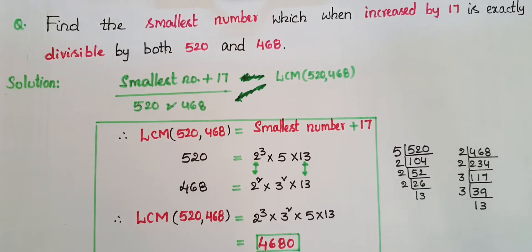Hello everyone, today I am going to tell the solution of a problem which is based on LCM. Here the problem is: find the smallest number which when increased by 17 is exactly divisible by both 520 and 468.